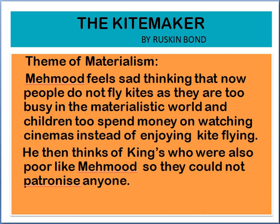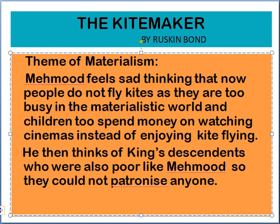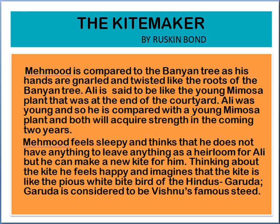The writer also talks about the descendants of a king who are poor like Mahmood. Two special symbols are used in the story — one is the kite and the other is the banyan tree. The banyan tree has a symbolic meaning and has been compared with Mahmood, who has grown old, just as the banyan tree is also very old. Mahmood's hands are described as gnarled and twisted like the roots of the banyan tree. Ali is compared with the young mimosa plant — Ali is young, and the mimosa plant is also young — and Mahmood thinks that after two years, both of them will acquire enough strength.